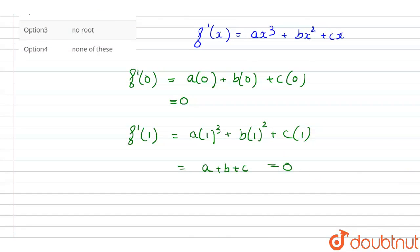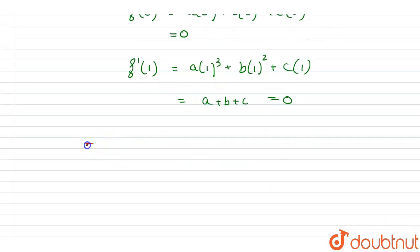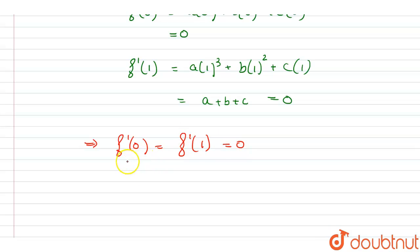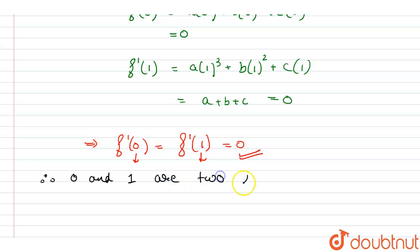So this implies that F(0) equals F(1) equals 0. We have shown that substituting x as 0 and x as 1 both give the antiderivative a value of 0. Therefore, 0 and 1 are two roots of F(x). Now, using Rolle's theorem: